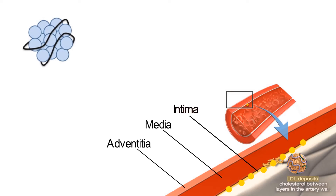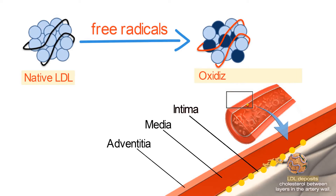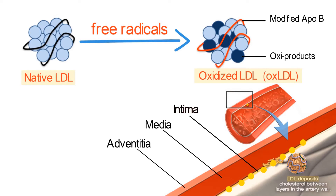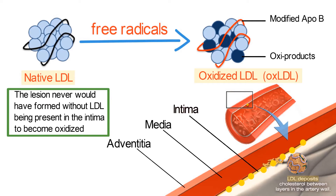After accumulating in the intima, LDL cholesterol is exposed to free radicals, such as reactive oxygen species, and the LDL becomes oxidized, abbreviated ox-LDL. It is ox-LDL that is taken up by cells and leads to the development of an atherosclerotic lesion. While it is ox-LDL that forms the atherosclerotic lesion, the lesion never would have formed without LDL being present in the intima to become oxidized.